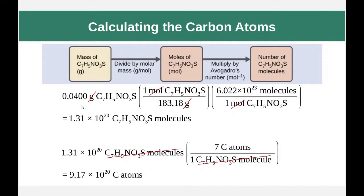Since there are seven carbon atoms for every one saccharin molecule, we multiply 1.31 times 10 to the 20th by 7 to get 9.17 times 10 to the 20th carbon atoms.